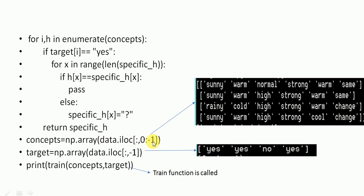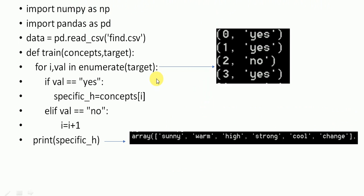The next np.array takes the rows and the last column using minus one, meaning only the last column. That last column contains yes, yes, no, yes and it is stored in 'target'. The print_concepts function is then called, which in turn calls the train function.